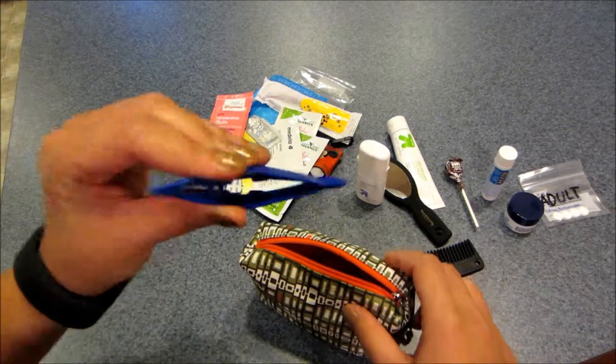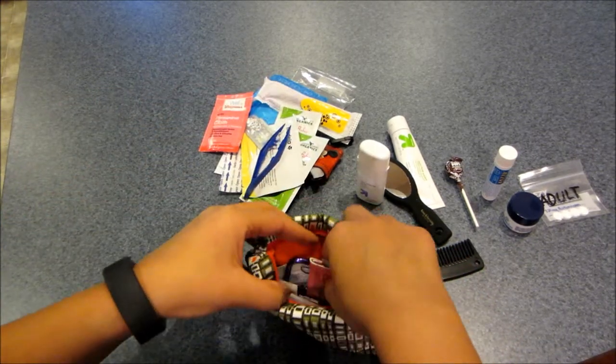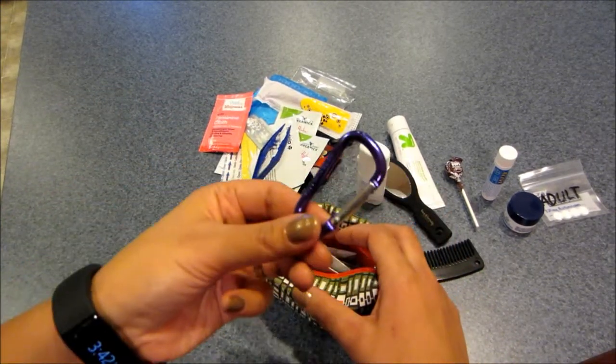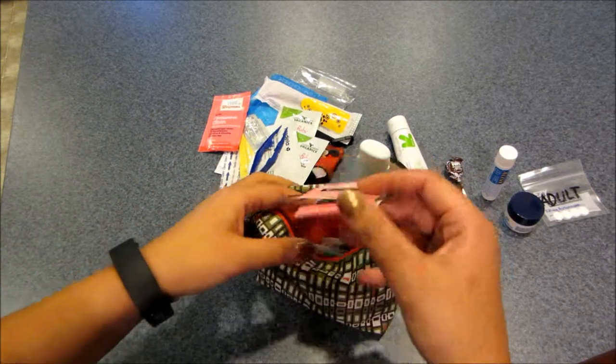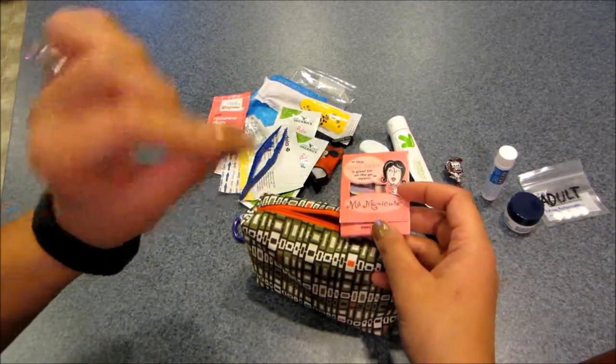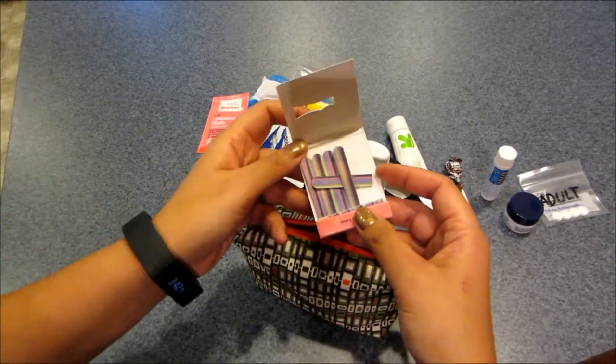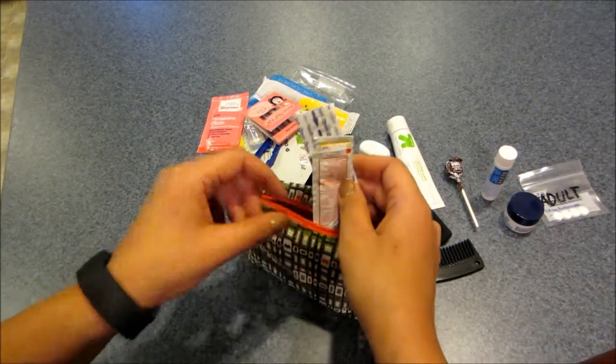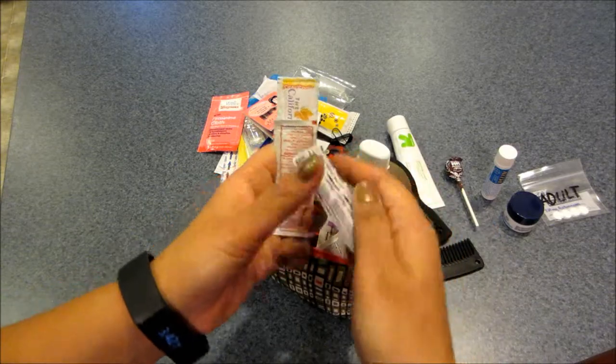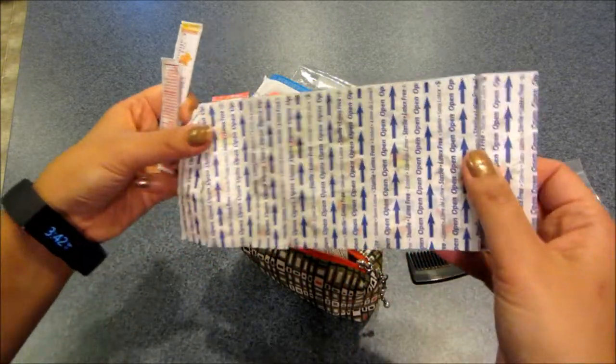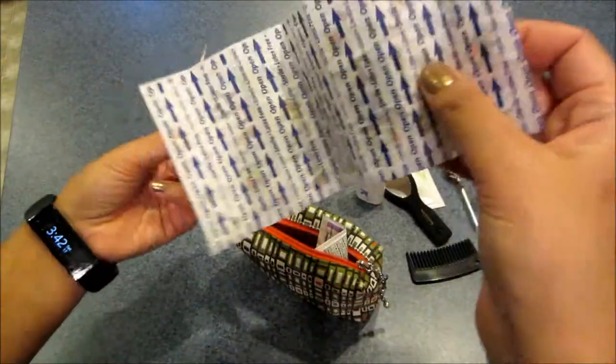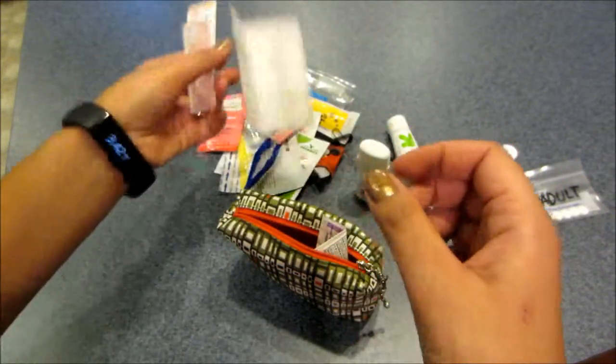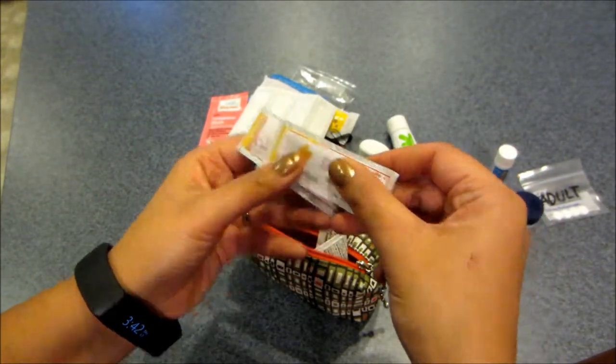I have a pair of tweezers, a carabiner because you never know if you'll ever need one, a hairpin, nail files, and a few band-aids. I had a Medibuddy and I took it apart and put everything in here. And then I have some more sunscreen.